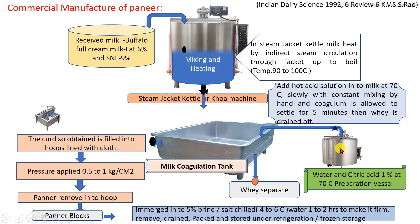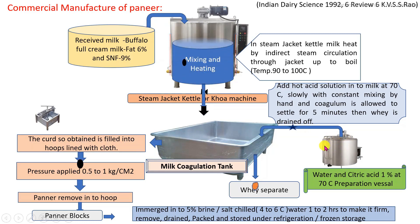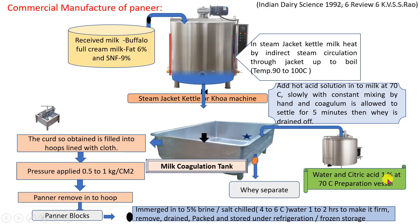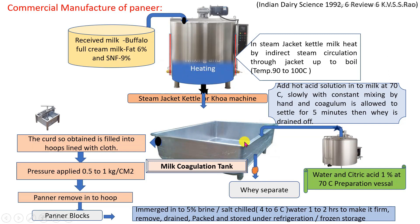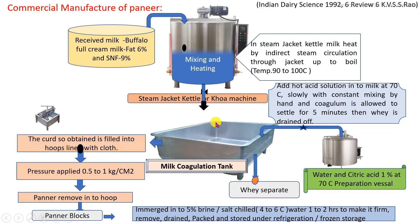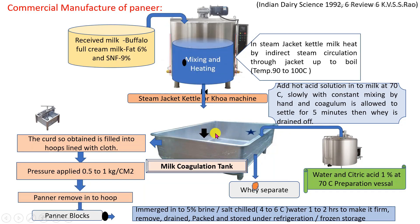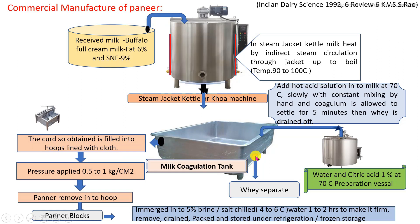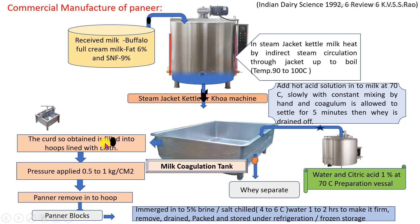Into the coagulation tank, dilute solution of citric acid or lactic acid is added. This solution is preheated to at least 70 degrees Celsius and the dilution ratio is 1 to 1.5%. It is continuously added in proportion to the quantity of milk, with continuous stirring by hand. This is operated as a batch-wise process, in which coagulation is completed in the tank. After completion of coagulation, the drain valve is opened, the whey is drained out, and the remaining paneer is taken for the pressing process.